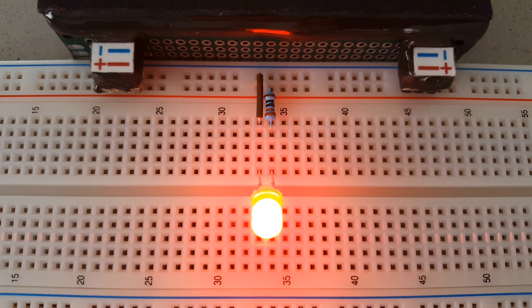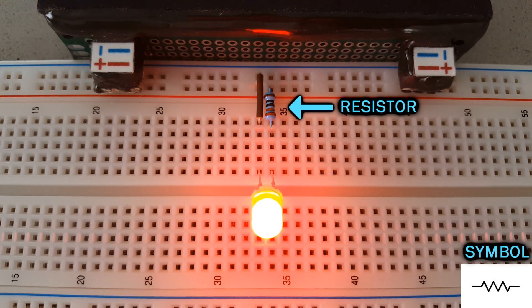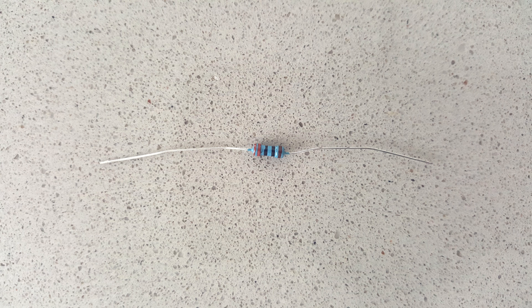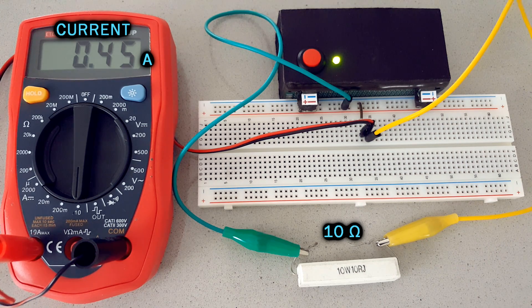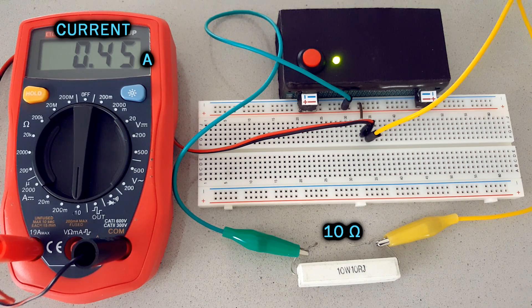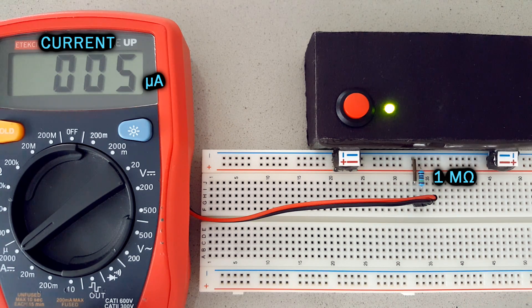For that we commonly use one of the most popular electronic components called the resistor. As the name implies, it resists the flow of electricity which comes in handy in the LED example. The level of resistance is measured in ohms, with values like 10 ohms letting most of the current flow with very little restriction, and values like 1 mega ohm only letting pass a tiny amount of current.